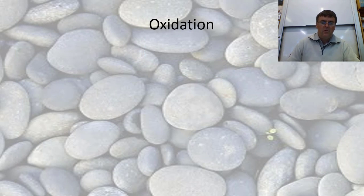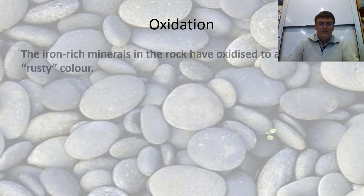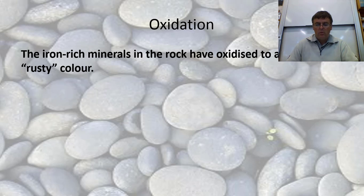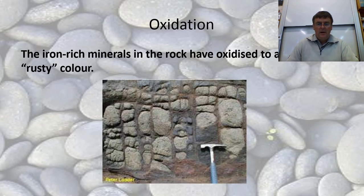Oxidation — as I said before, rusting. Many rocks are iron-rich and they simply rust in the rain. And following the joints and cracks in the rocks, we get lines of rust. Rust is a bit weaker, the rocks fall apart. Slowly.